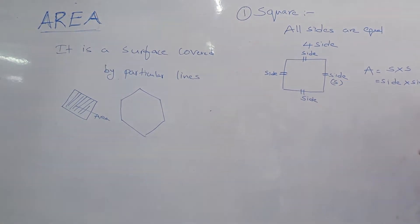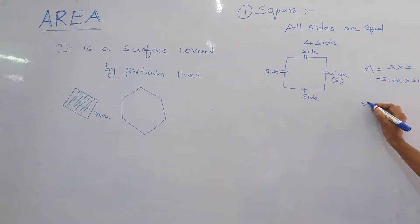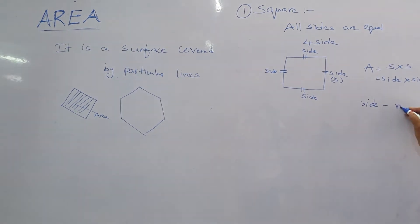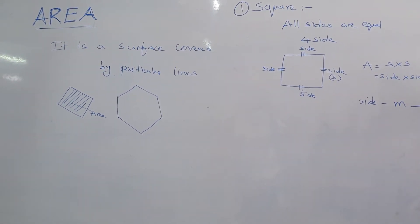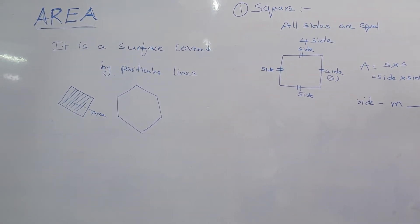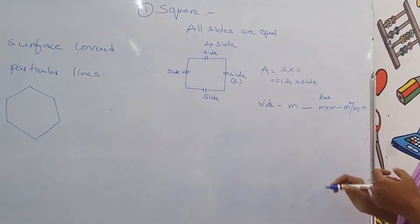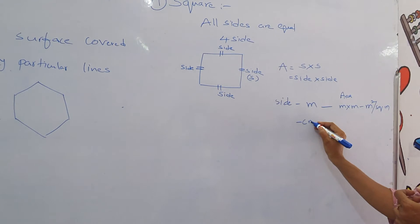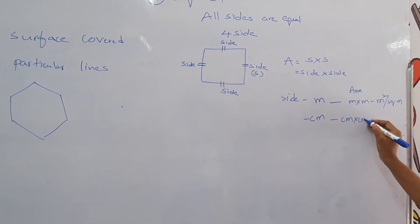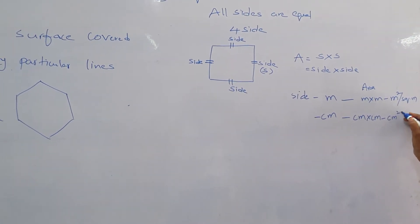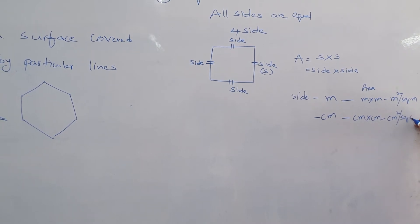Suppose the side is in meters. The area units will be meter into meter, that will become meter square or square meter. If the side is in centimeters, the area should be centimeter into centimeter, that is centimeter square or square centimeter.